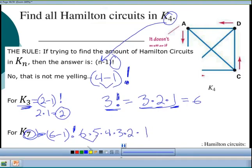So 6 × 5 is 30, times 4, times 3, times 2, times 1. This is how you find your answer in your homework when it asks what would it be for K_5 or K_10 or whatever it is.